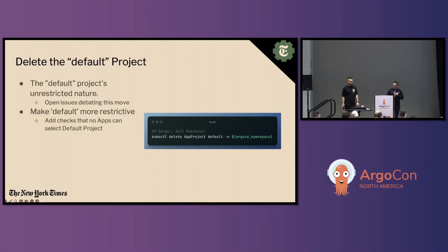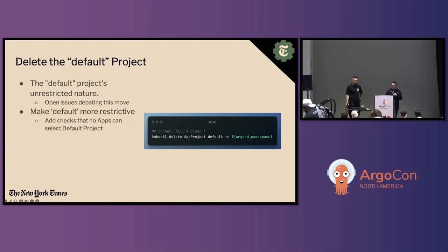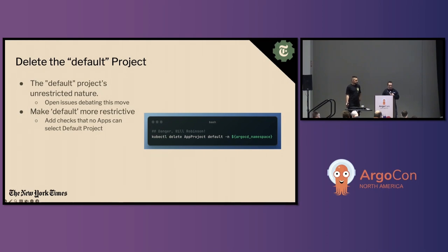Delete the default project. The default project in Argo CD might seem benign, but it is a potential Trojan horse. By allowing applications from all sources to manage resources across all destinations, it's an open invitation for security breaches — analogous to leaving your front door wide open. Though designed for learners to quickly grasp Argo CD's functionality, its potential misuse in production scenarios is vast. We advocate for its removal, even if it means directly intervening with kubectl. At minimum, review the default project, restrict any settings, and add checks to ensure no application utilizes the default project.